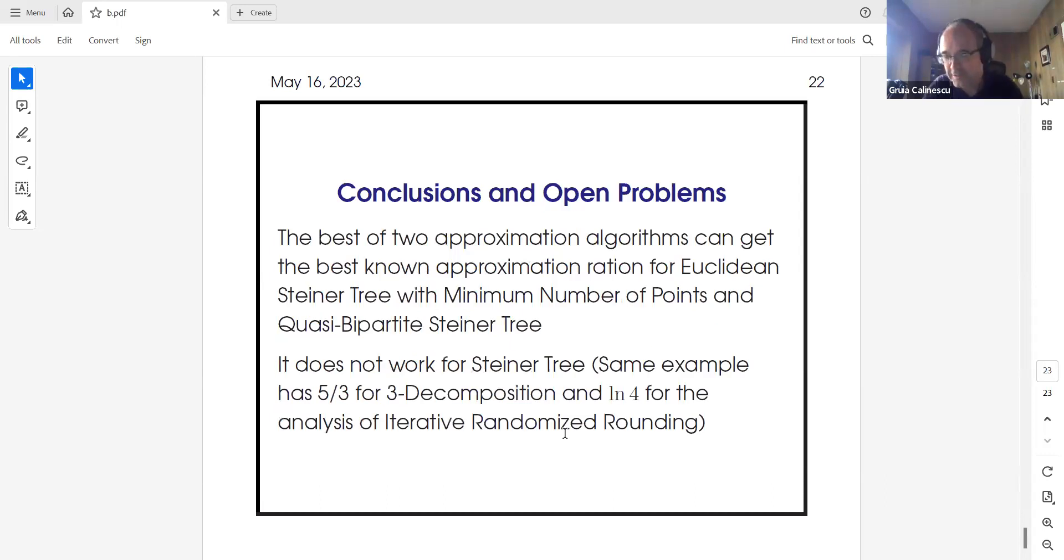I move to conclusions. We analyzed better two existing algorithms to obtain that the best of the two gets a ratio better than the existing one. Of course, the first thing we said was what if we can improve the Steiner tree approximation ratio, which would be a major result (that 1 plus logarithm of 4, which is the best known since 2010). But it doesn't work. We have examples where both algorithms (the 3D composition and the iterative randomized rounding) are tight. For the iterative randomized rounding, it's not so much the algorithm is tight, but the proof is tight. So we cannot improve that problem with this idea. Please ask me questions. I'm done with my presentation.